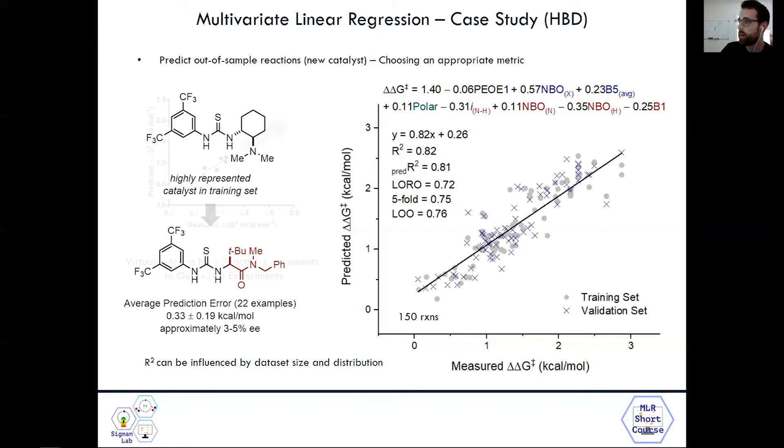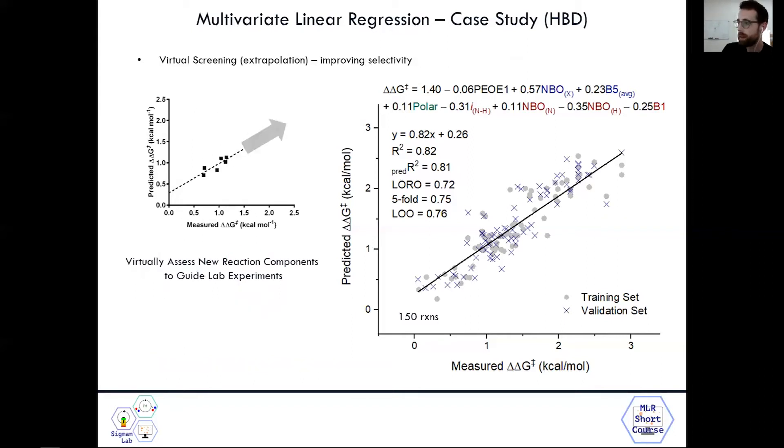Another really useful tool you can use is virtual screening, especially if you're setting one specific reaction and you're stalled out in the 70-80% EE range and you want to get to a more selective reaction. You can screen computationally steric and electronic changes to catalysts or reaction components, and it's a nice helpful tool to guide your lab experiments and validate your computational predictions.